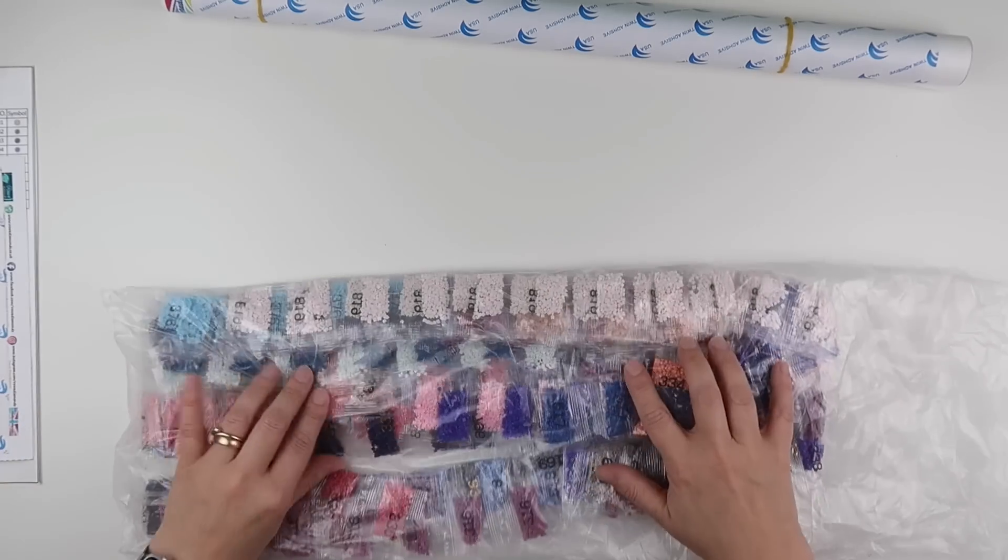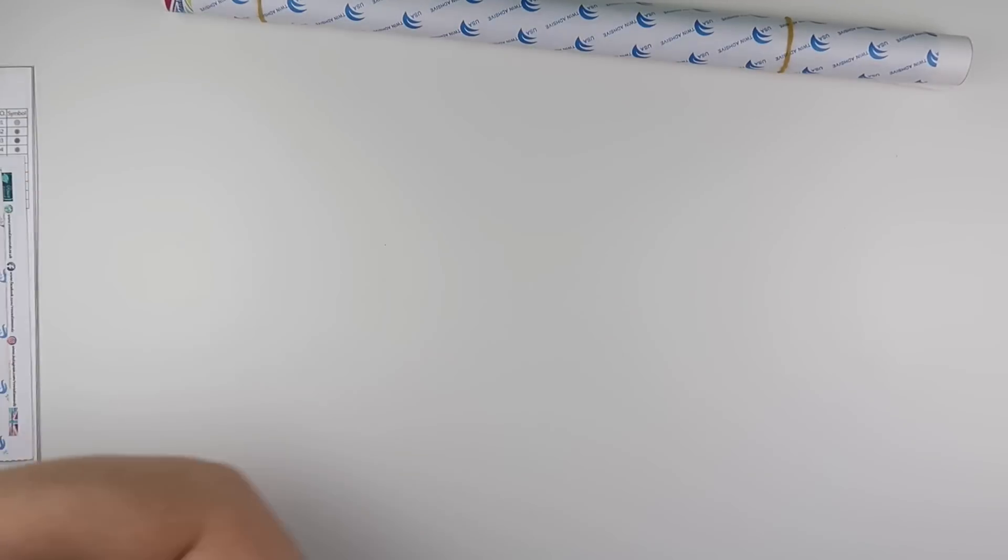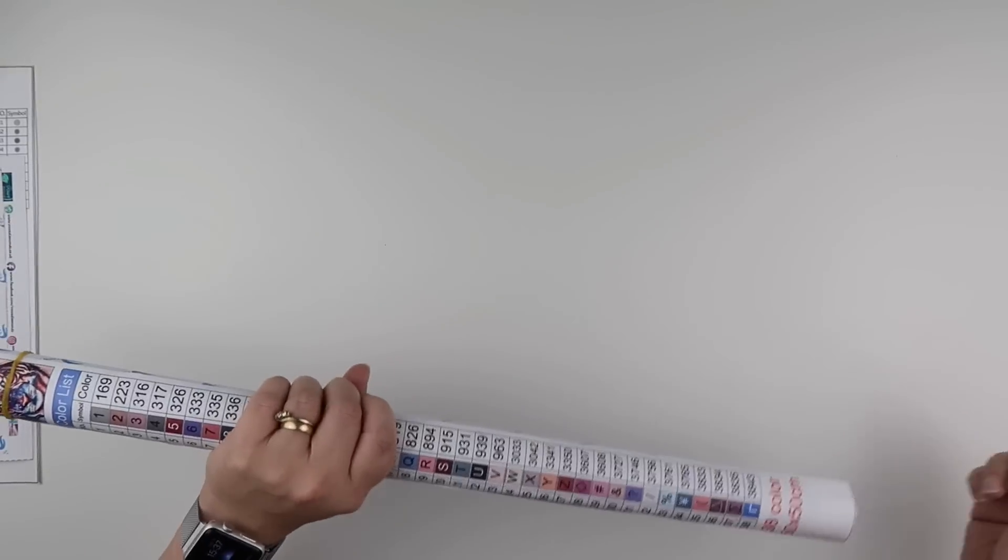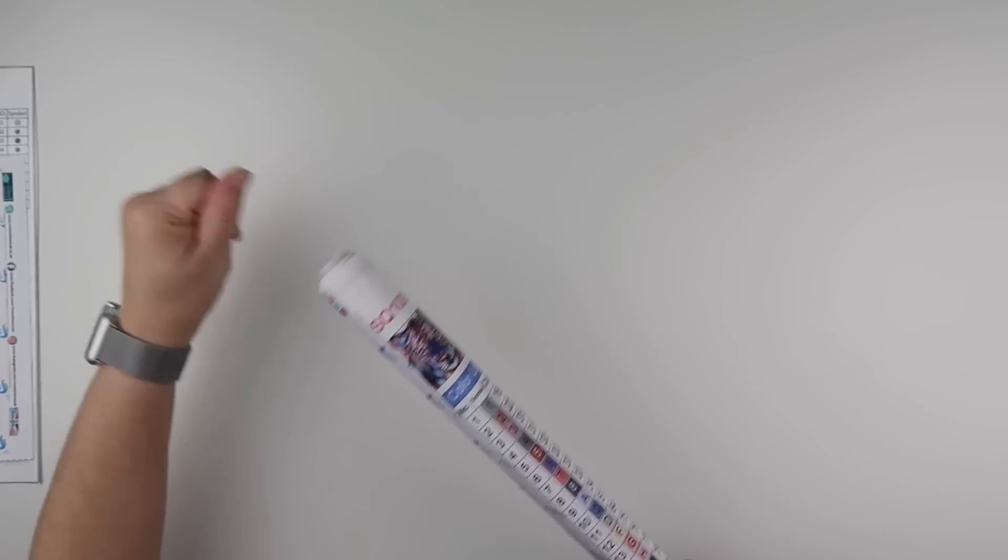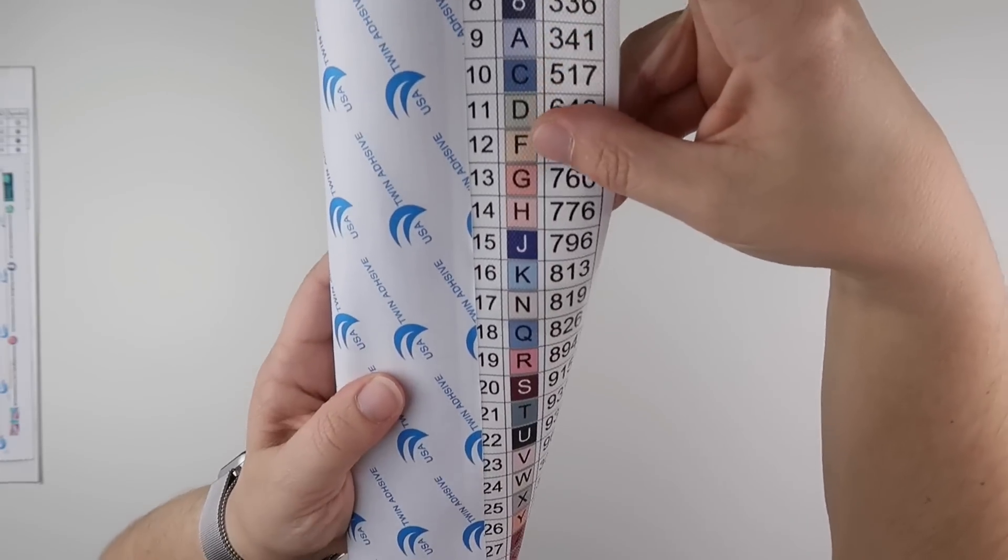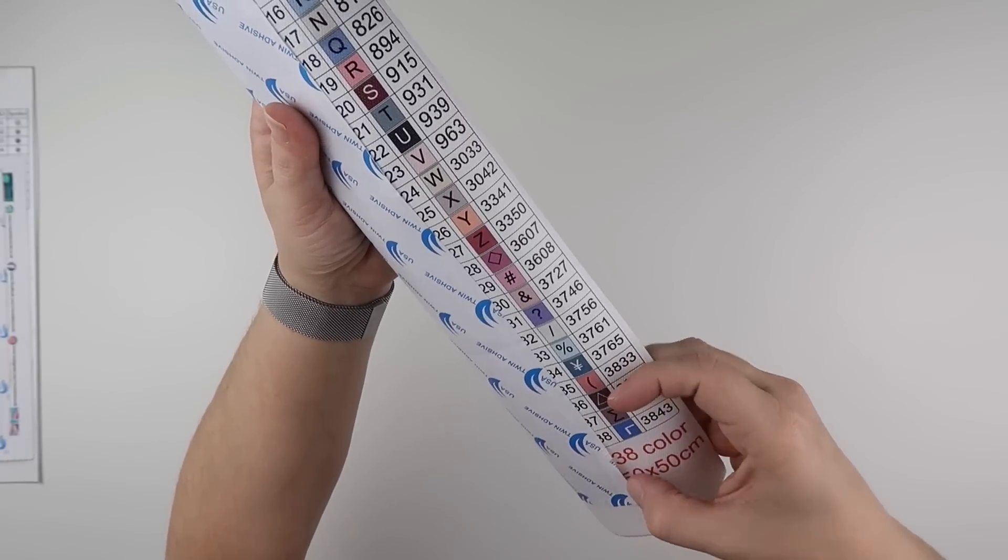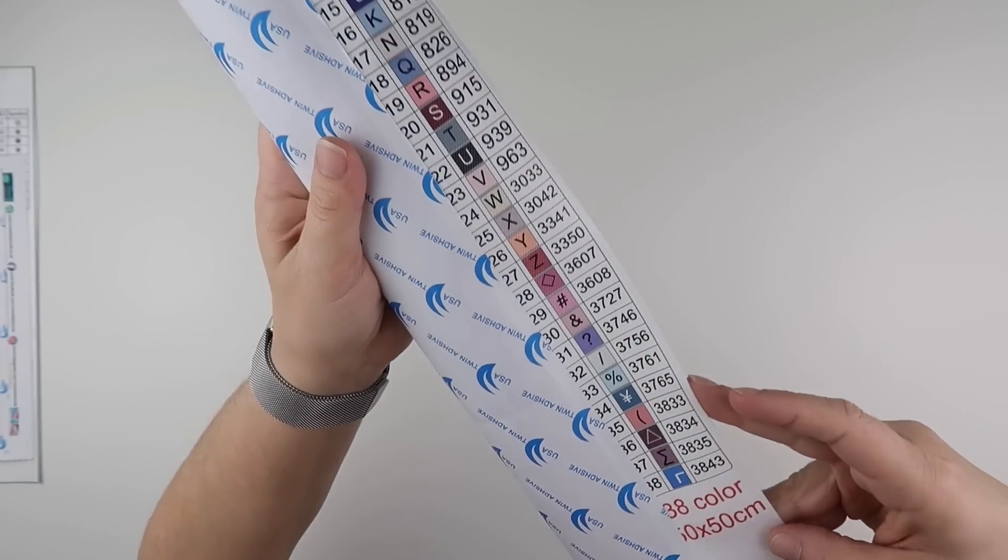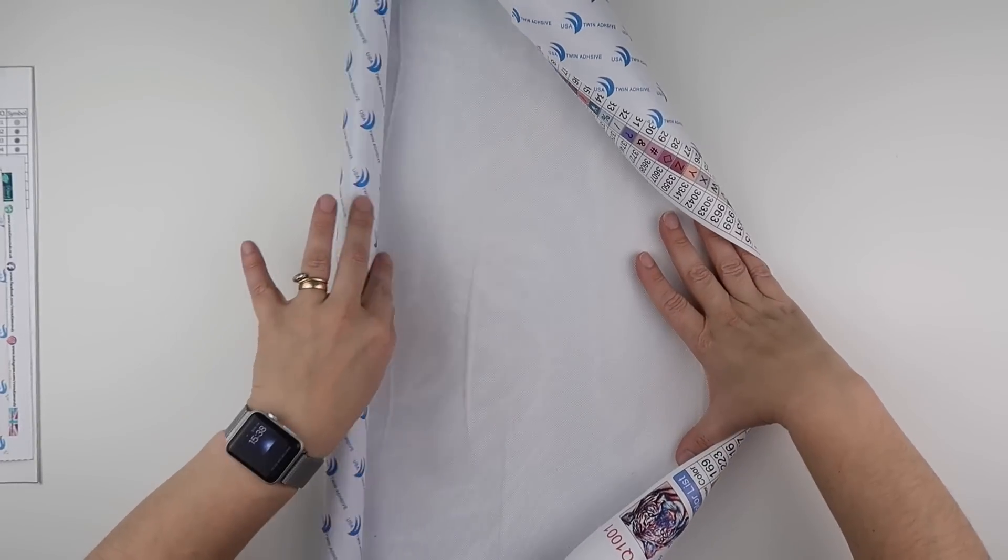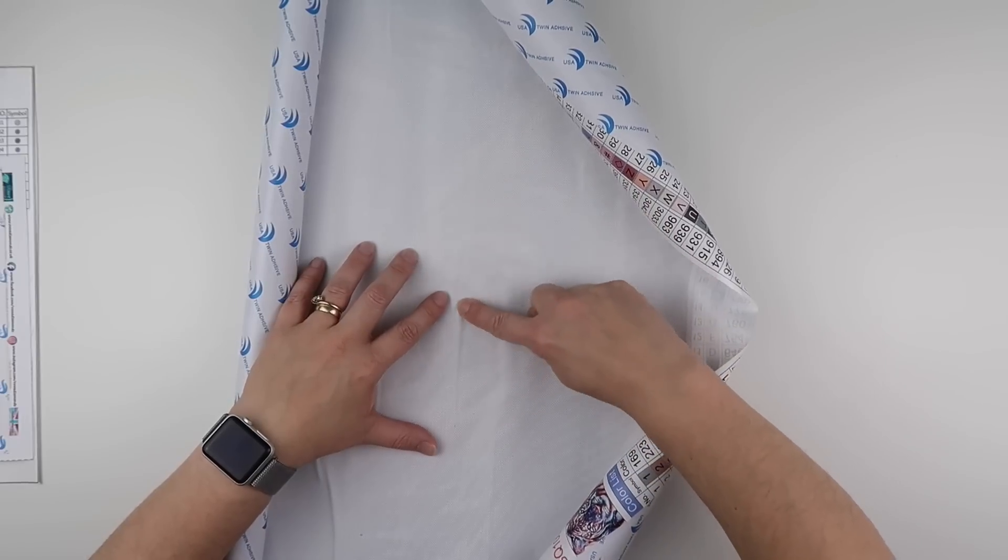Let's pop those down there and let's have a look. Oh, the symbol chart down the side is huge. Look at the size of that. That is really, really clear. It goes all the way down to 38. 38 colors and this is a 50 by 50. Whoa.